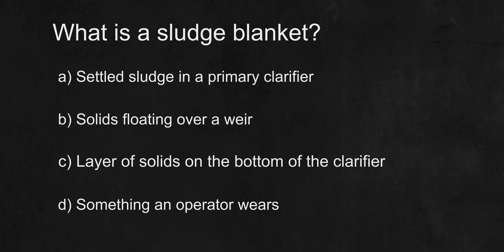What is a sludge blanket? A. Settled sludge in a primary clarifier. B. Solids floating over a weir. C. Layer of solids on the bottom of a clarifier. D. Something an operator wears.